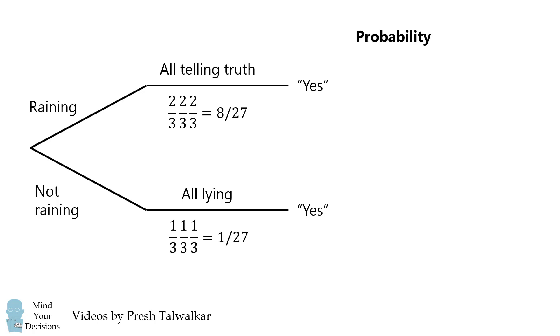We now want to calculate the probability of each branch. But there's a problem. We need to know the probability that it rains in Seattle.